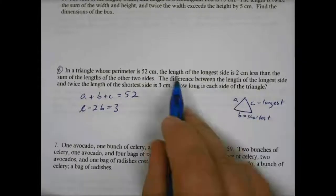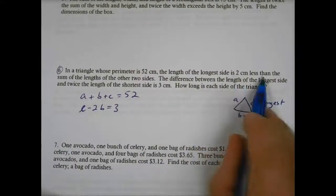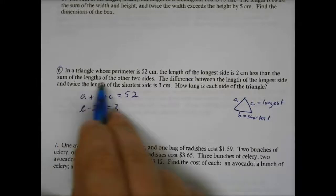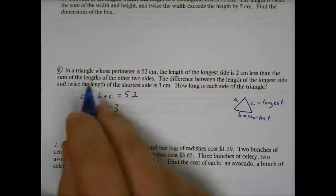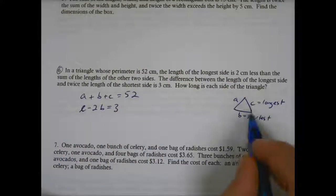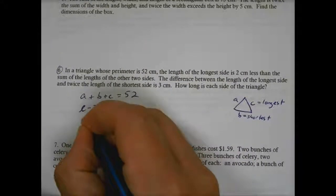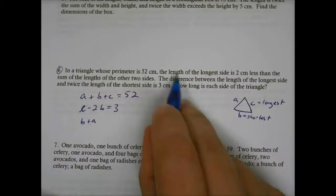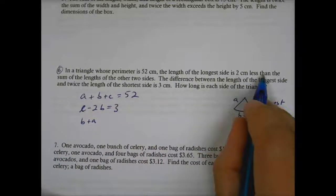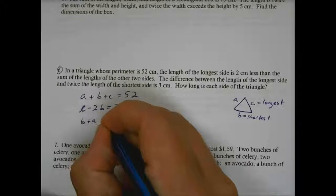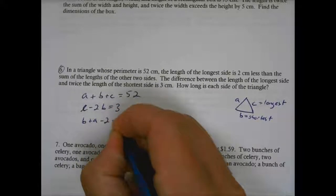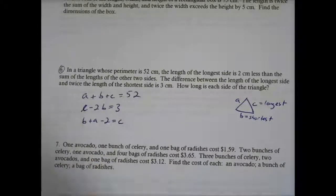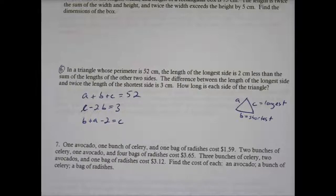Oh, and I skipped a sentence, I'm sorry. The length of the longest side is two centimeters less than the sum of the lengths of the other two sides. So two centimeters less than the lengths of the other two sides, so B plus A. The length of the longest is two centimeters less. So we need the sum of these two, minus 2, and that should be the length of the longest. So again, three equations, three variables. I'll teach you how to solve these later.